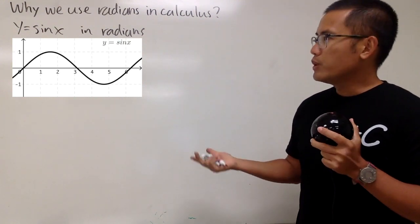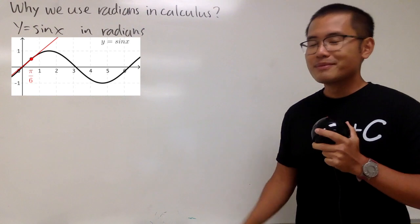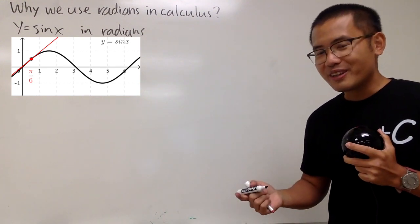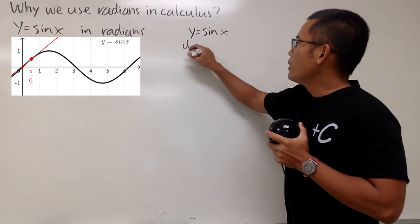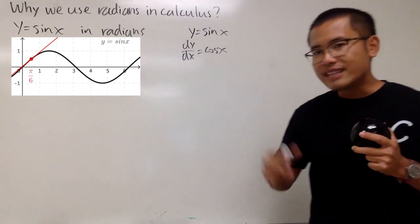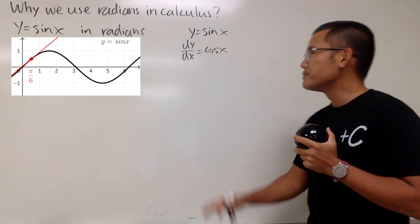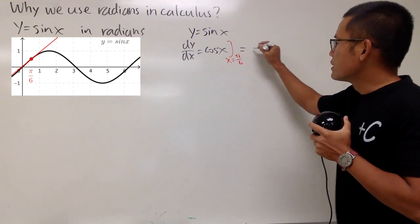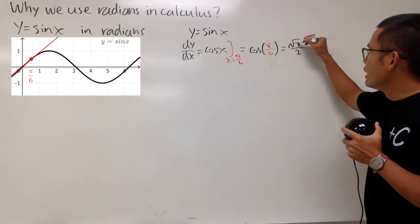Now let's talk about derivatives — we can interpret them as the slope of the tangent line. Let's consider x = π/6 and draw a tangent line there. We'll assume we know the derivative of sin(x). The derivative of sin(x) is cos(x). When proving that, radians come in as well — but that's for another video. So plugging in x = π/6, we get cos(π/6), which equals √3/2. That's the slope of the tangent line.